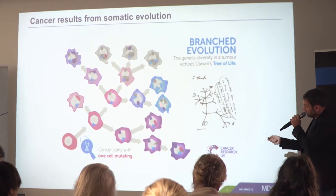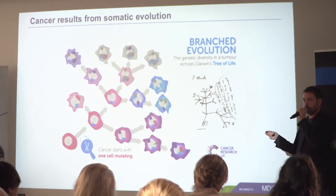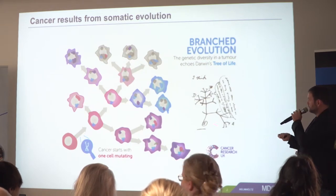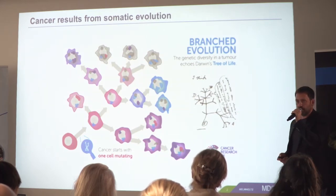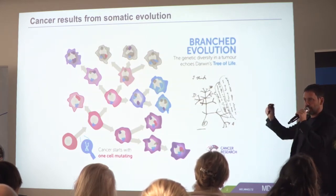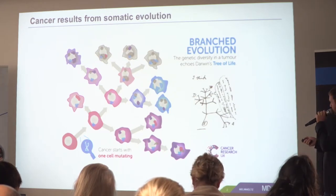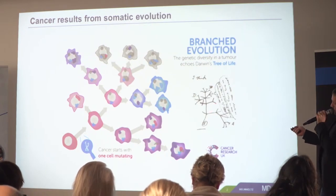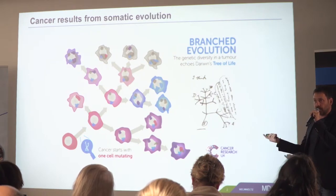Cancer is in itself an evolutionary disease, which is why I put up Darwin's original first drawing of a phylogenetic tree. As cancer scientists we don't travel the world as much, but we think in the same concepts, and there's a huge parallel between evolution on the species level and evolution on the cellular level.